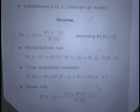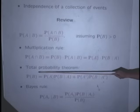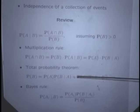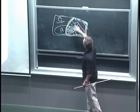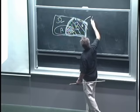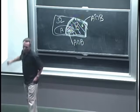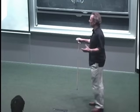Conditional probabilities are left undefined if the denominator is zero. An easy consequence of the definition — bringing that term to the other side — is that we can find the probability of two things happening by multiplying the probability that the first happens by the conditional probability that the second happens given the first. This gives us the multiplication rule.